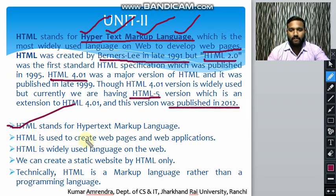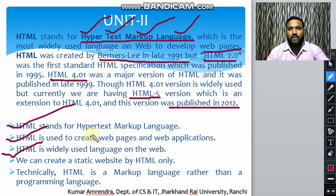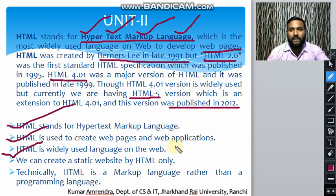HTML is used to create web pages and web applications, and it is widely used on the web. Every website you use — like google.com or any other — first used HTML. Now, with the help of HTML, CSS, and JavaScript, and even PHP, we use HTML for designing and developing graphical features. We can create a static web page using HTML.